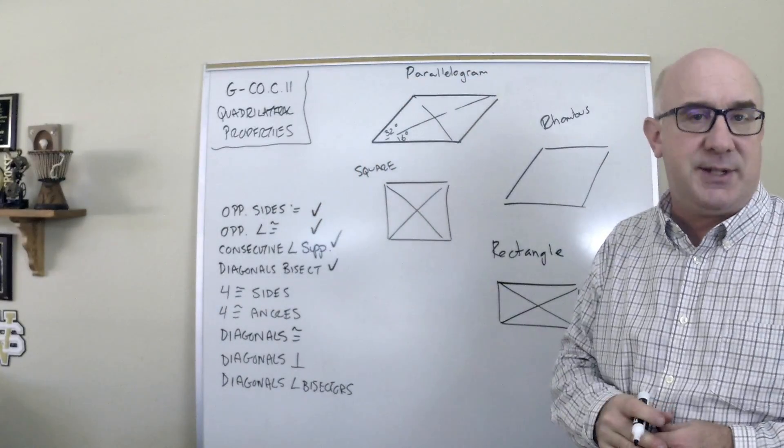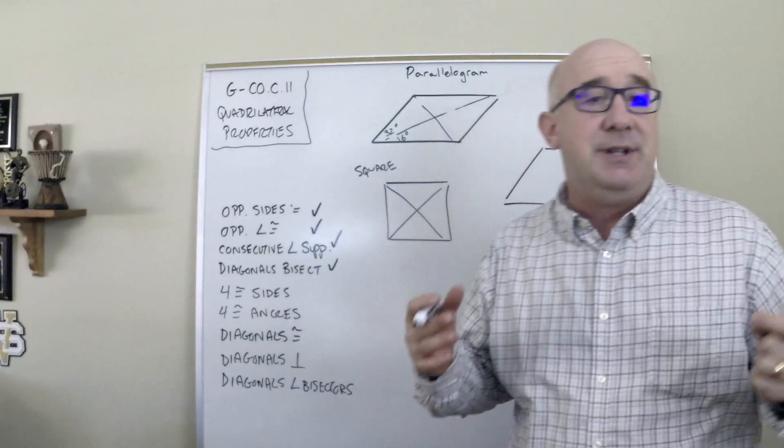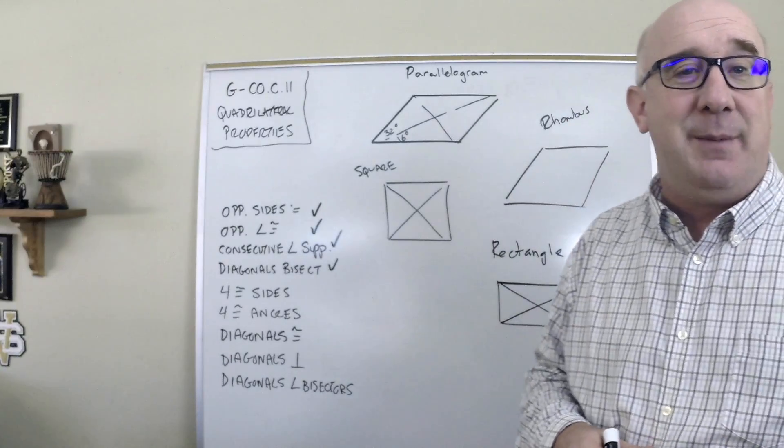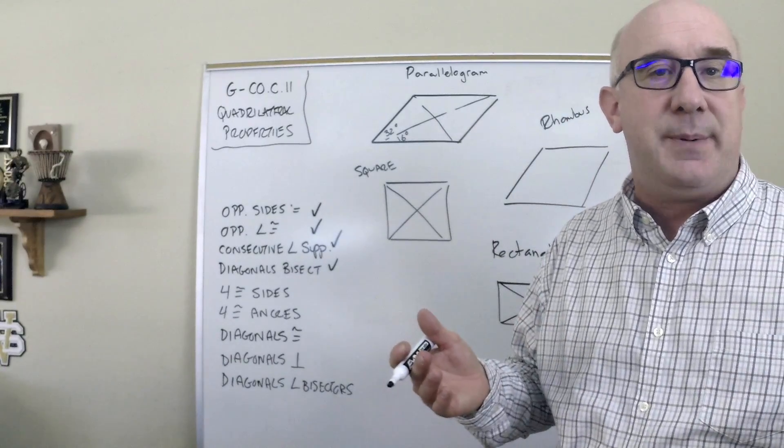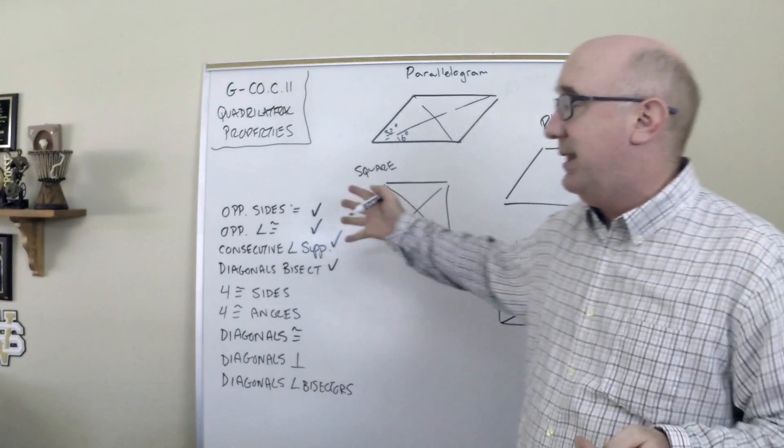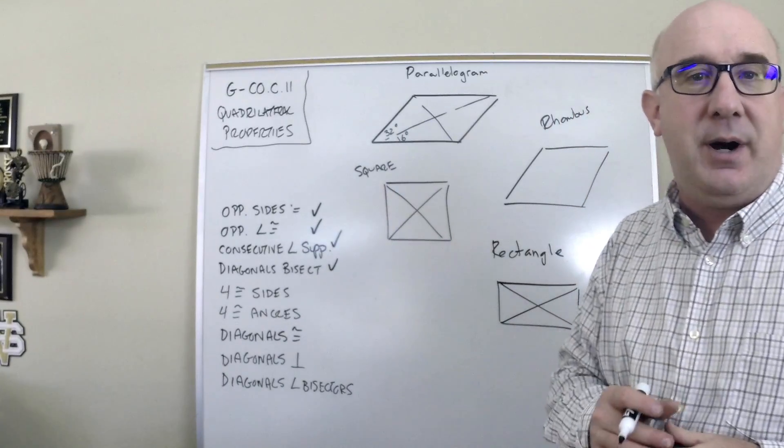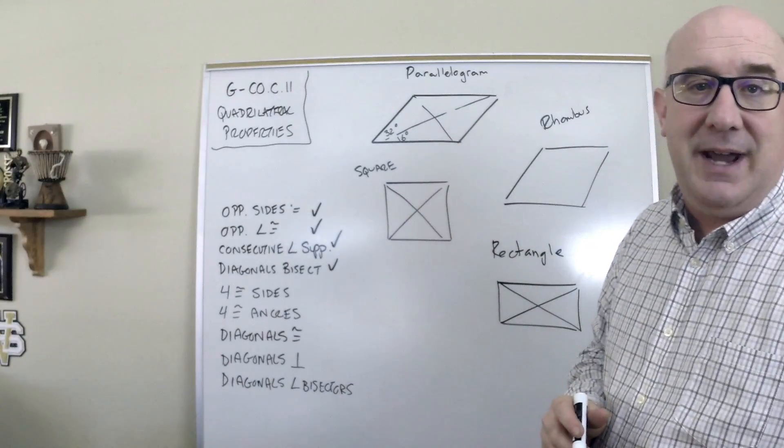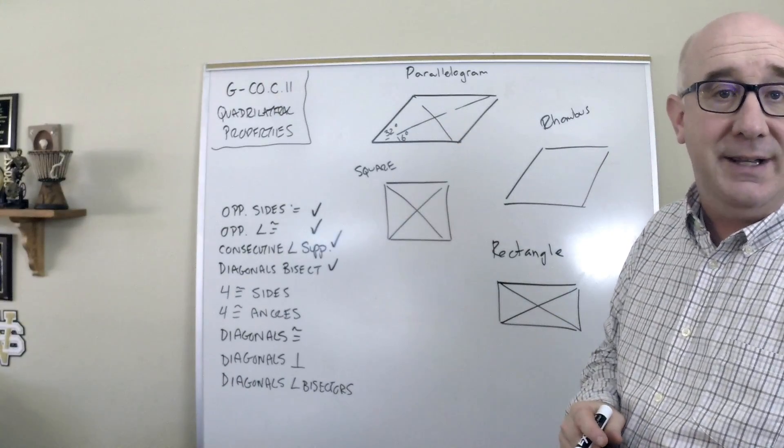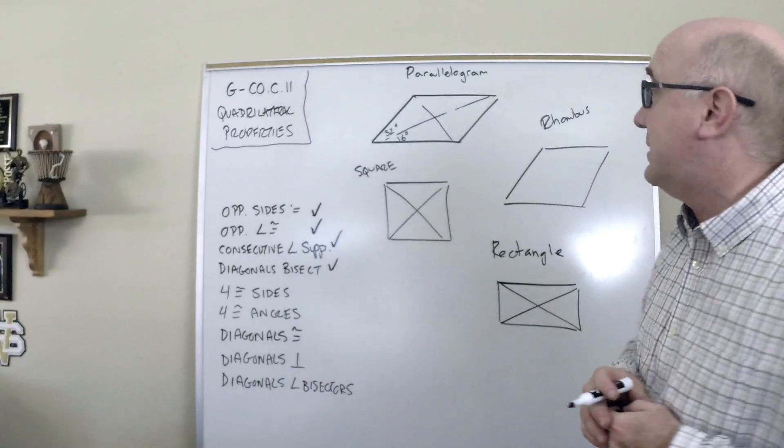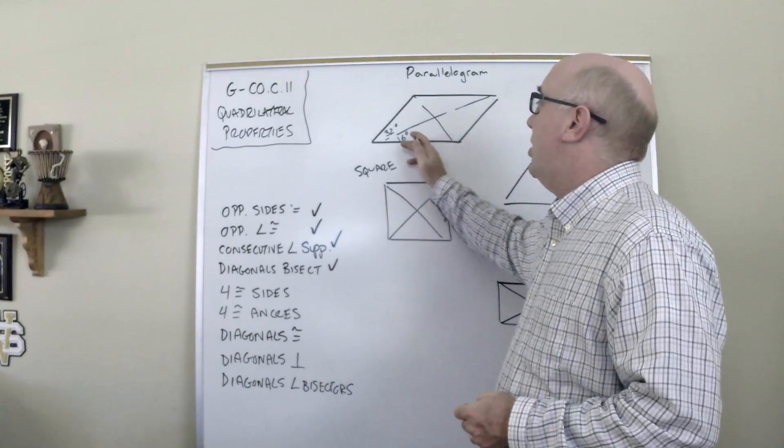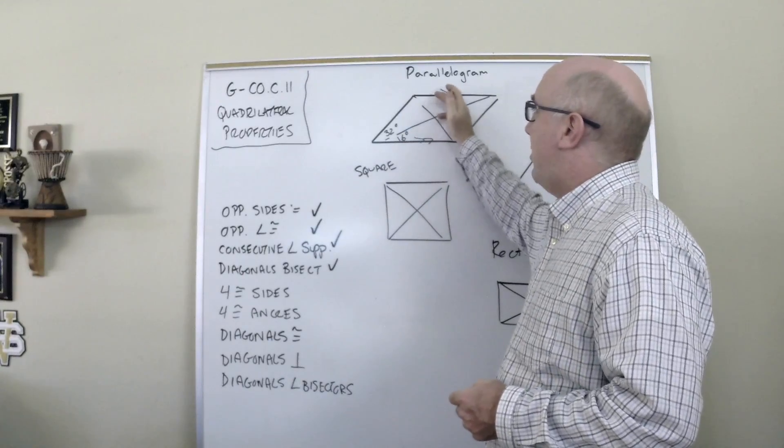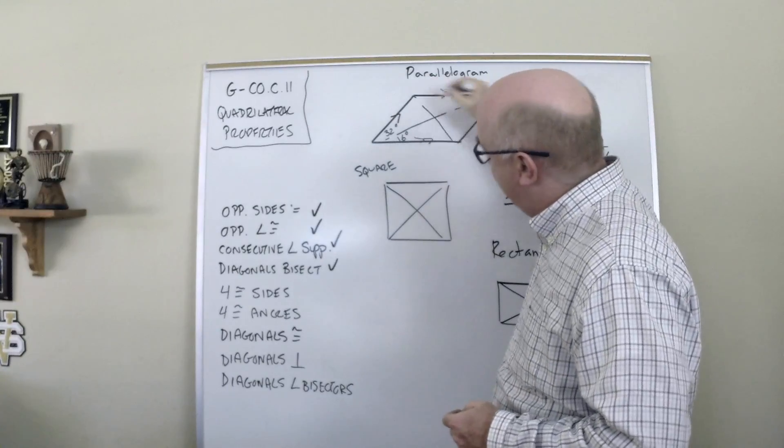And these first group here, this group of four, is what you can expect. Also the definition of a parallelogram is opposite two sets of opposite sides that are parallel. Now that's not in the list but it is a part of a parallelogram. So let's say they gave you a couple of angles here and said, you know, find the other angles or whatever the case may be. You would know that these lines are parallel and these would be a parallel match.